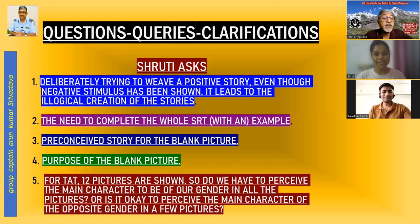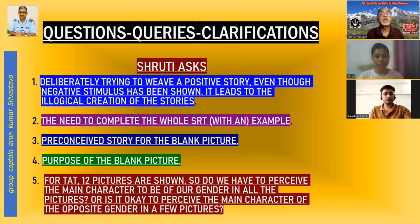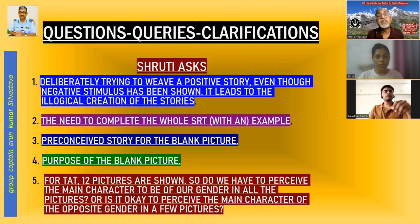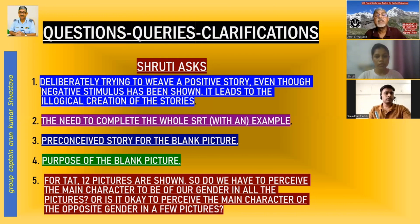Coming to the fifth question of Shruti: you are shown 11 or 12 pictures, and do you feel it is compulsory to select a hero of your own gender? Technically speaking, any person who is carrying forward the issue, solving the issue, completing the task — any person can be a hero. But in our Indian context, boys and girls are being raised with different role expectations and different concerns. The society is not yet free of this discrimination, and that is why we have got different TAT sets for boys and for girls.